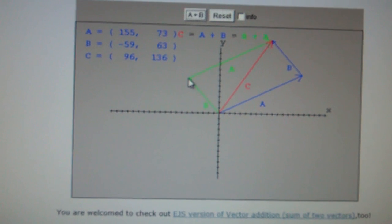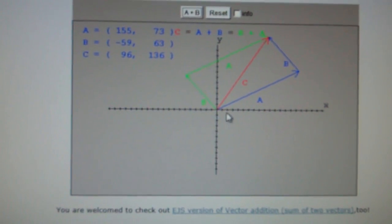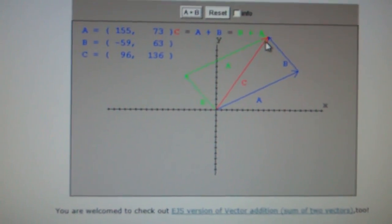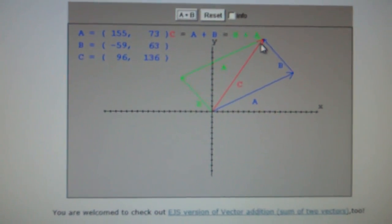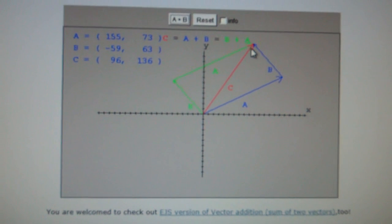Okay, and it tells you what the resultant vector when you add them is, and it's going to be 96.136. Pretty cool. You can check all your work that way, and I strongly encourage you to do so.